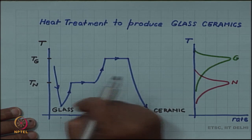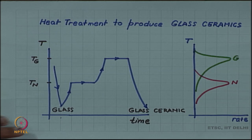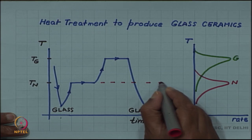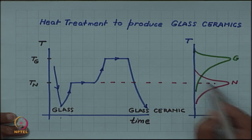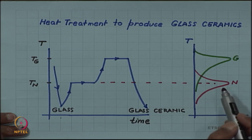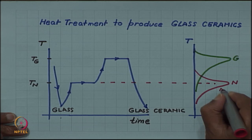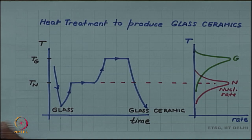Then this glass is held at a temperature at which the nucleation rate is maximum. This curve, recall we have studied that the growth rate and nucleation rate as a function of temperature show a maxima. This N is the nucleation rate, Ng is the growth rate.